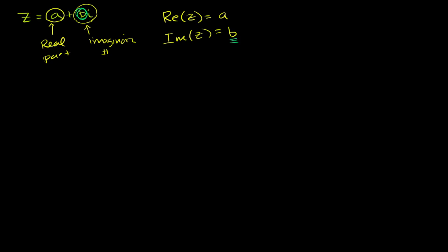So if this is z, the conjugate of z, it'd be denoted z with a bar over it. Sometimes it's z with a little asterisk right over there. That would just be equal to a minus bi.